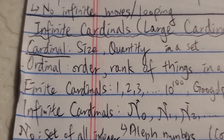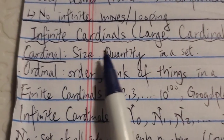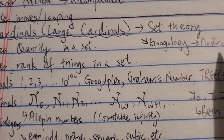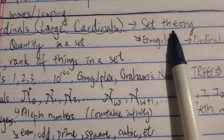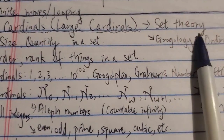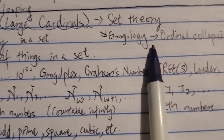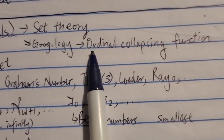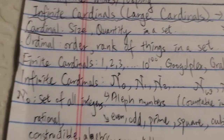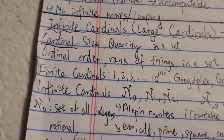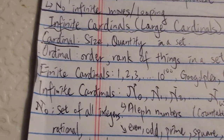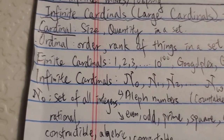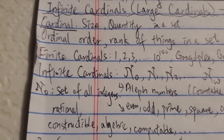Hi everyone. Today we're going to talk about infinite cardinals or large cardinals. This is a topic request by some people and it is related to set theory, and it is also used in part of Googology. I already have a few videos on cardinals and ordinals, so feel free to watch those. In those videos I'm just talking about aleph-null and aleph-one.